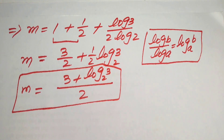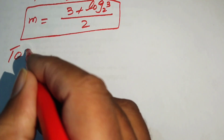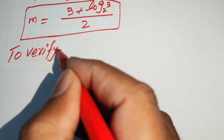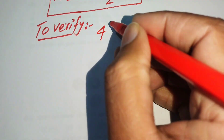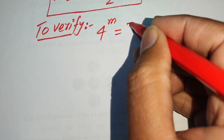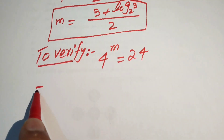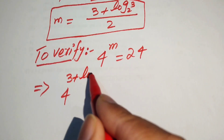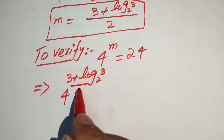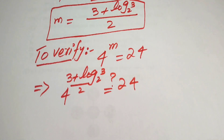Now we need to verify whether this value of m satisfies the given equation. We copy down the original equation: 4 to the power of m equals 24. We substitute our value of m: 4 to the power of (3 plus log base 2 of 3) divided by 2, and check whether this equals 24.